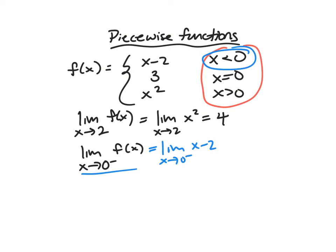I only care about the points near it but left of zero. And x minus 2, that's just a nice line. I can plug it in. And so I get zero minus 2, which is negative 2.